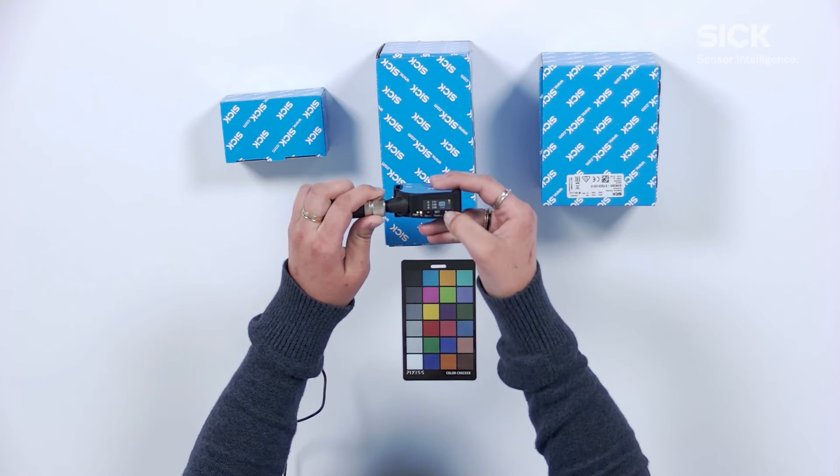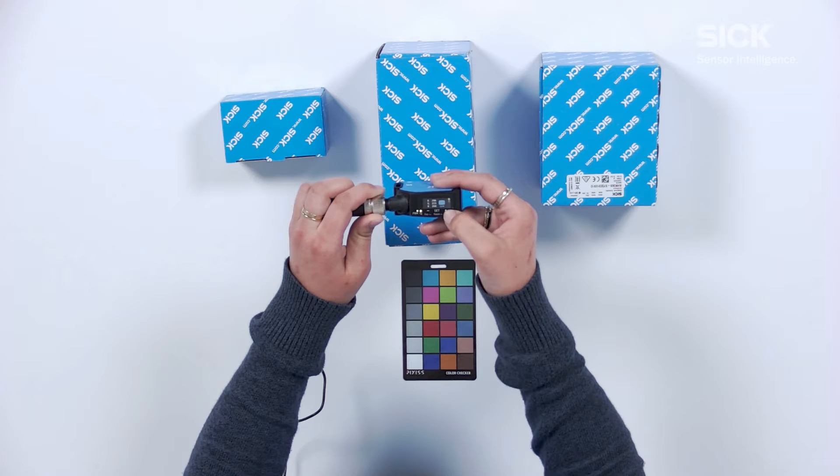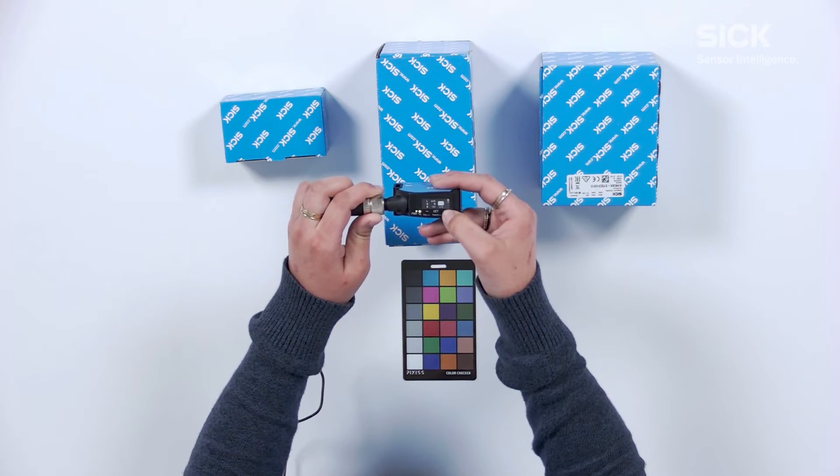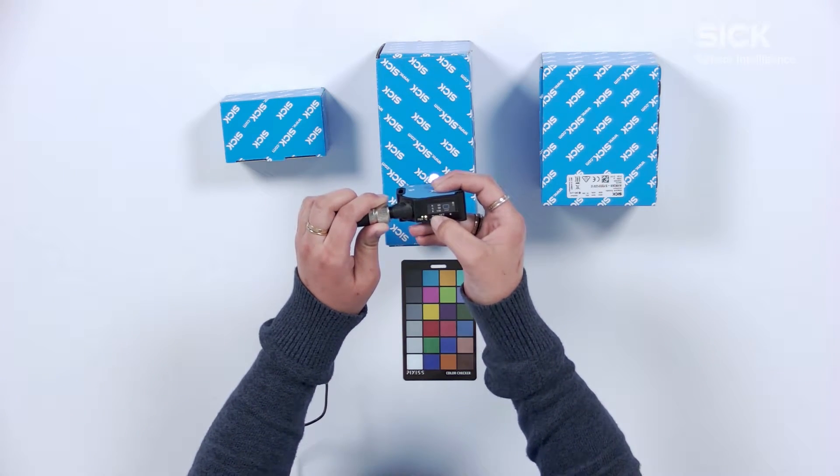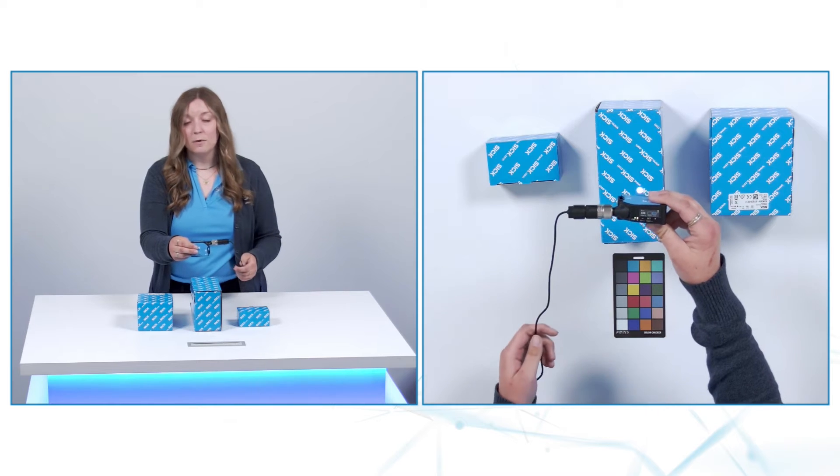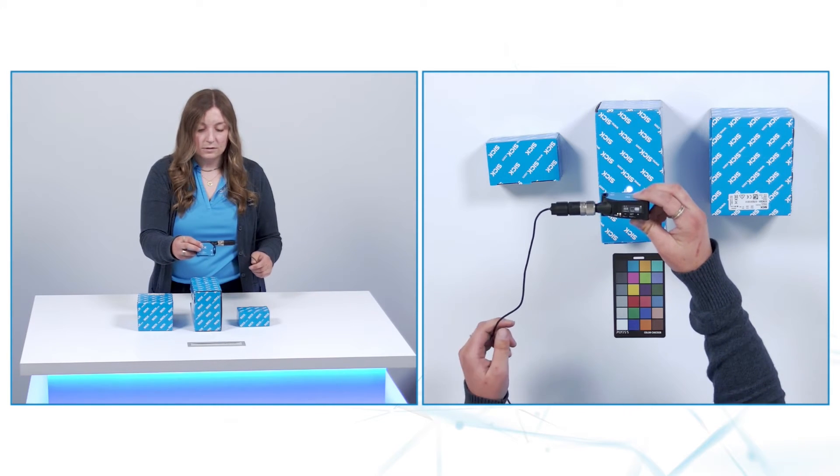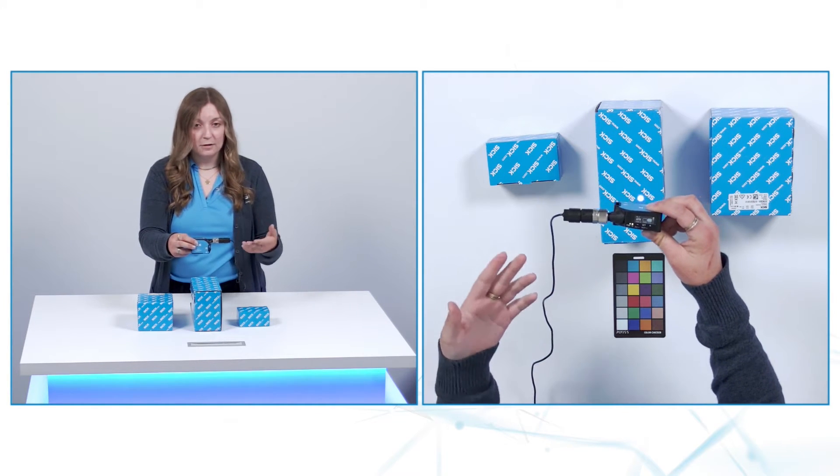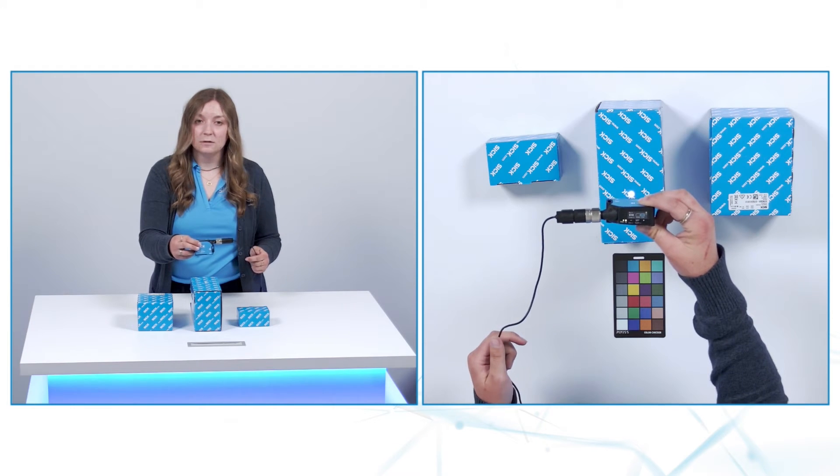We can also use these plus and minus buttons to view both the RGB as well as the LAB values. Now I'll go back to the main screen and show you a quick multi-value teach-in using these SICK boxes that have a pattern to show you what we're able to do.